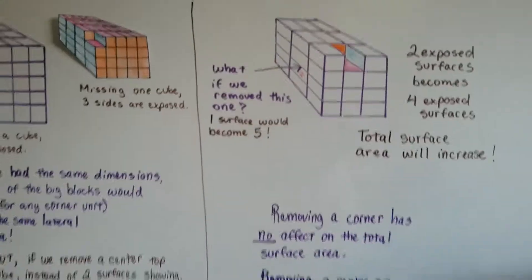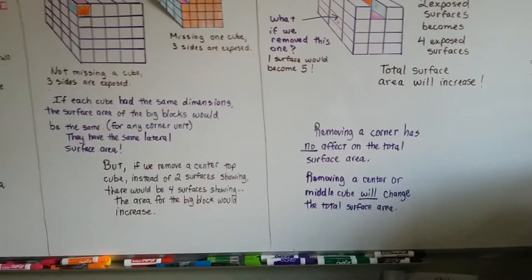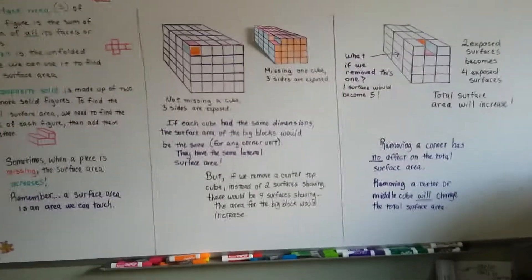So removing a corner has no effect on the total surface area. Removing a center or middle cube will change the total surface area and make it increase. Isn't that strange? Strange but true.